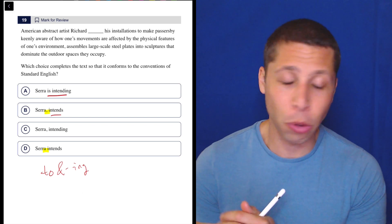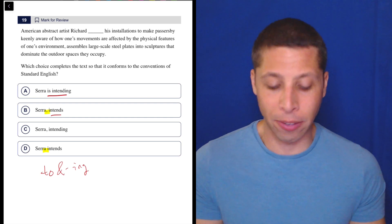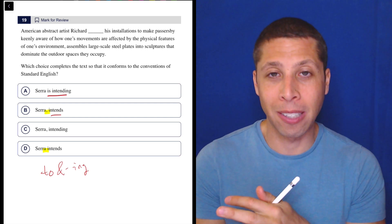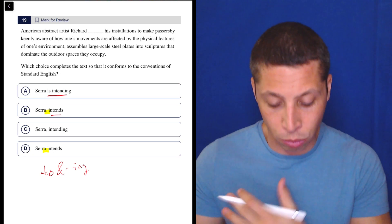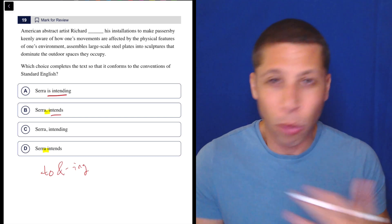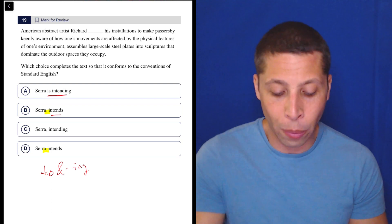This is not verb tense about past, present, future. I can tell because they're all kind of in the present tense. It's also not verb tense about singulars and plurals because it's very obviously going to be a singular. American abstract artist Richard Serra is intending. We can tell it's singular, so it's not about that.